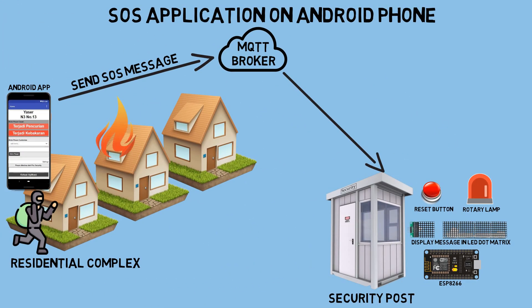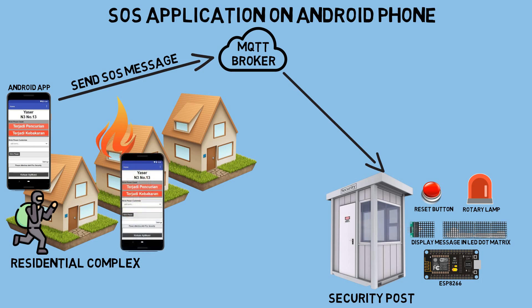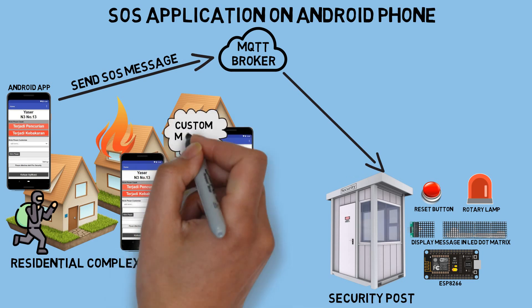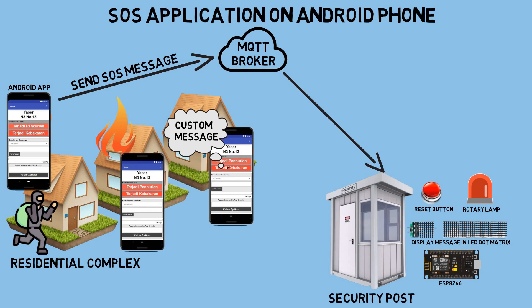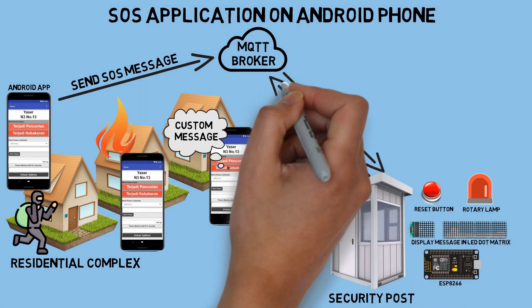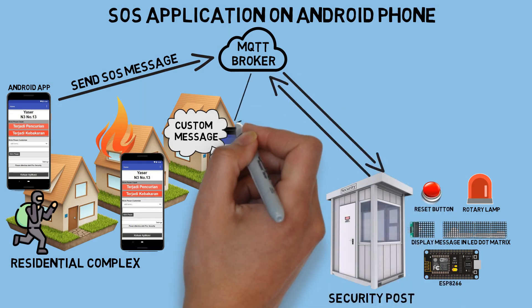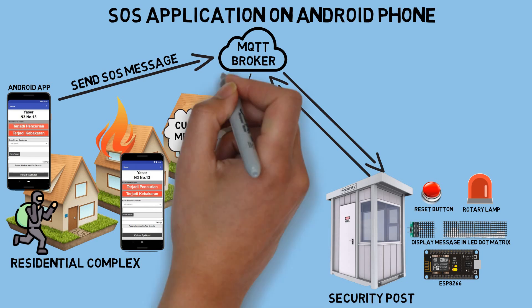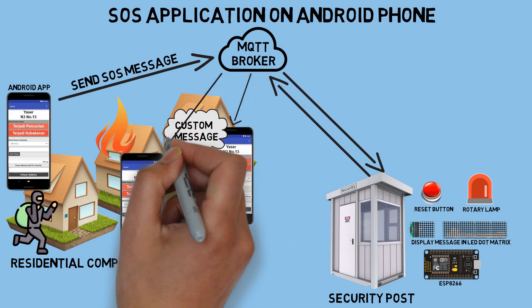Similarly, if a fire occurs, residents can quickly send an SOS message from the application. In addition to theft and fire incidents that can be swiftly reported, residents can also send custom messages to the security post according to the information they want to convey. Every ESP that receives an SOS message will also send this message to the MQTT broker, which will then be received by all residents who have the SOS application, ensuring that everyone receives the same message.